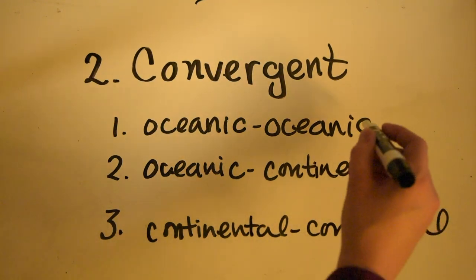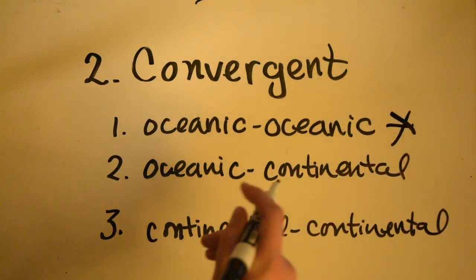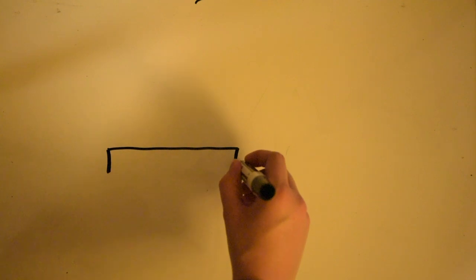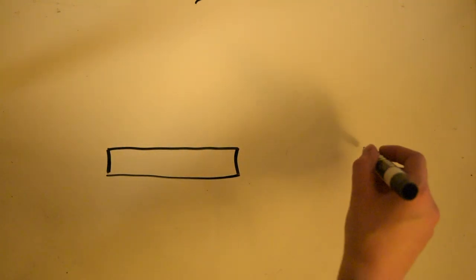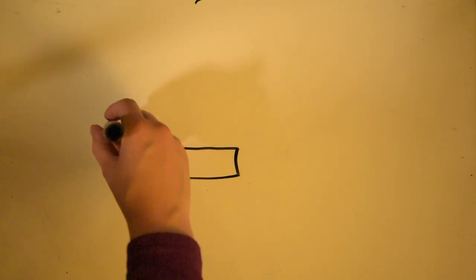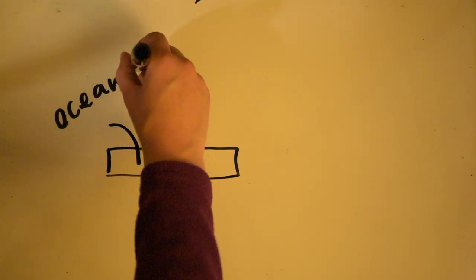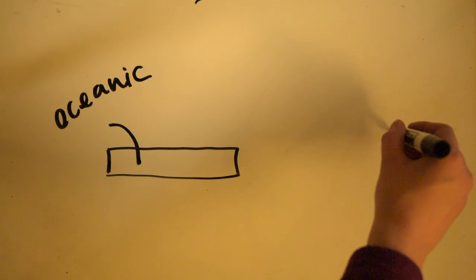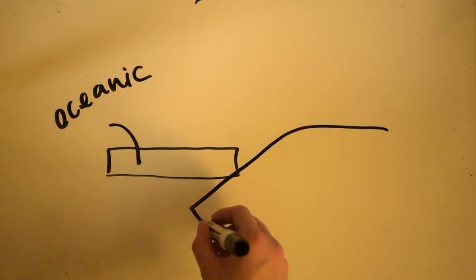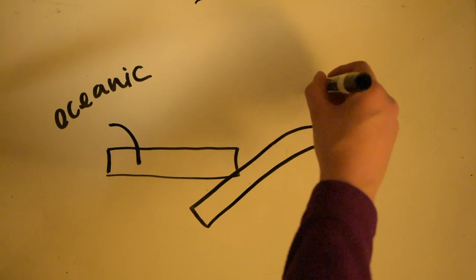The first one of these that we're going to focus on today is the oceanic-oceanic. An oceanic-oceanic plate boundary is when you have two pieces of crust. One of them is oceanic, and the other one is also oceanic, but it gets subducted or goes underneath another piece of oceanic crust.